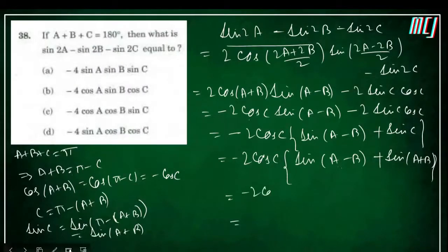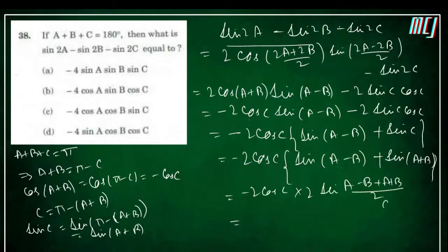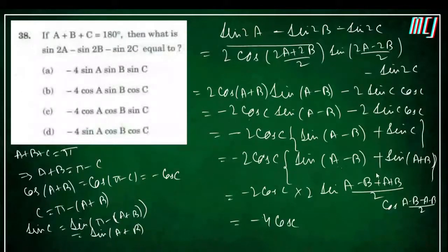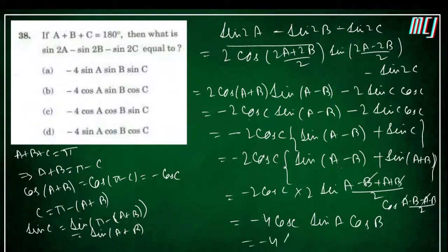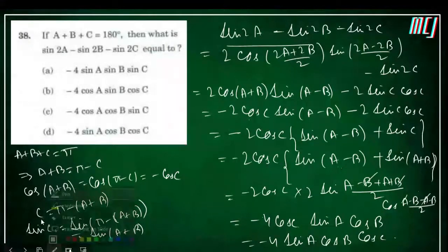After correcting the formula application, the result is −4sinA·cosB·cosC. So the answer is option D, which is the correct answer. This question is directly formula-based.